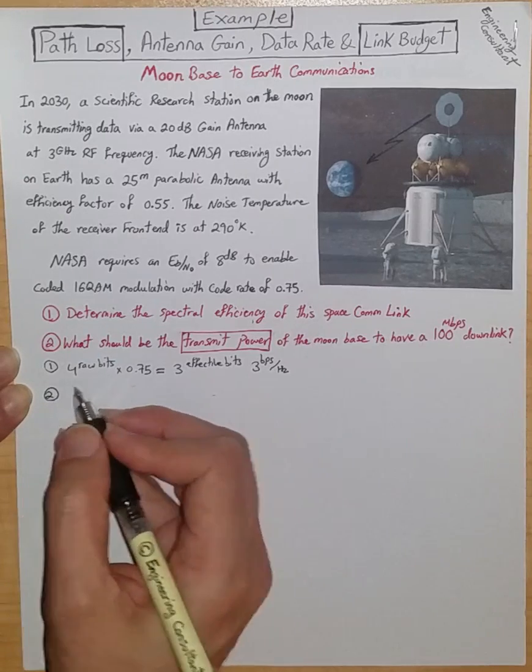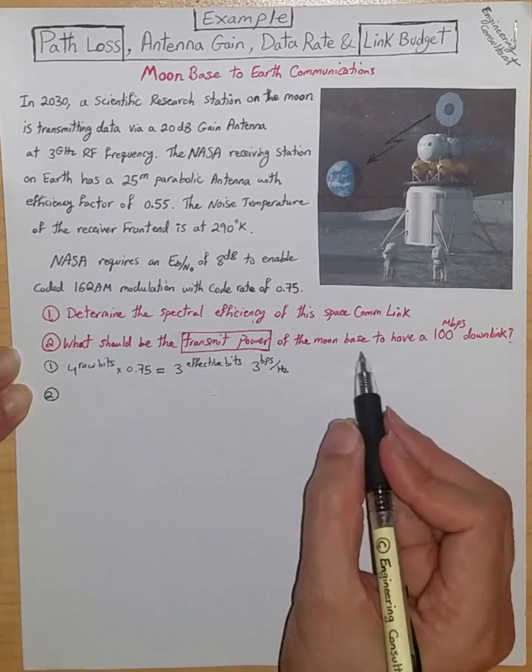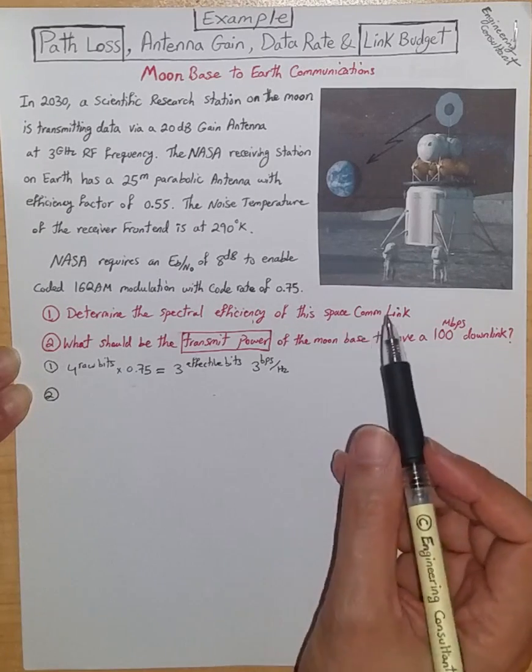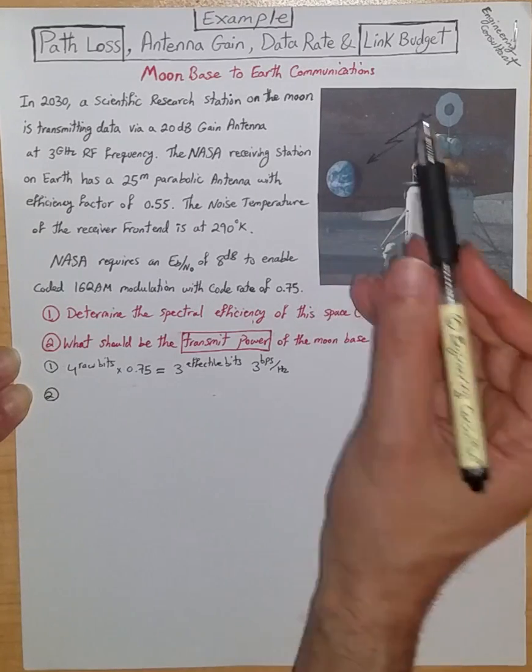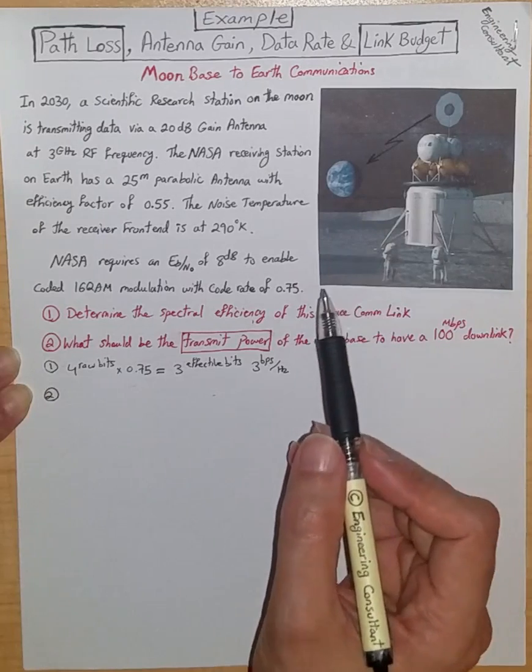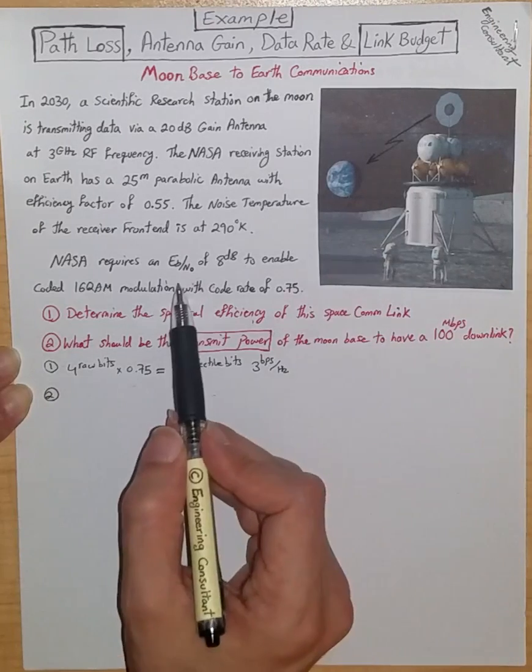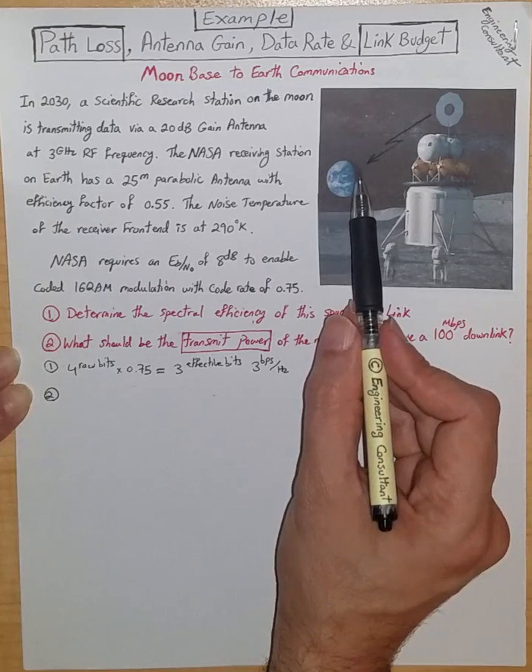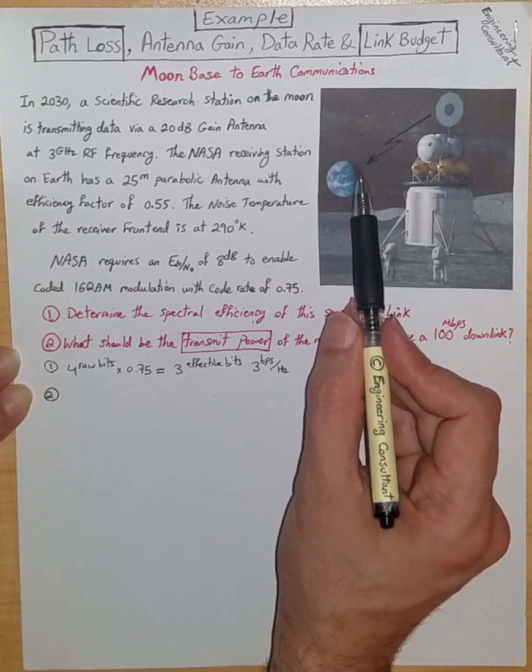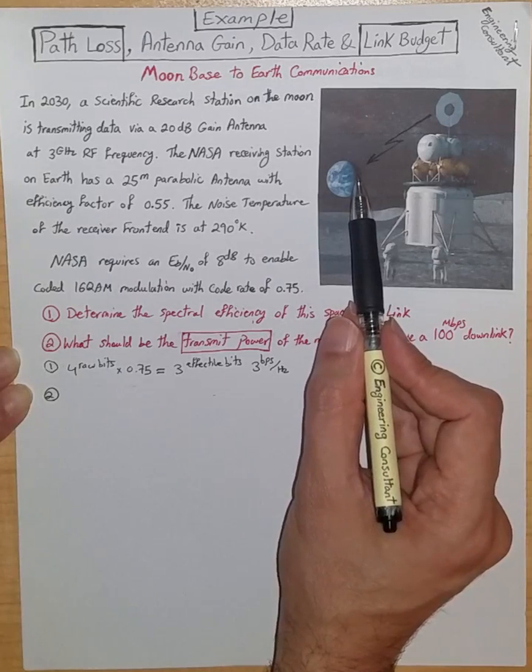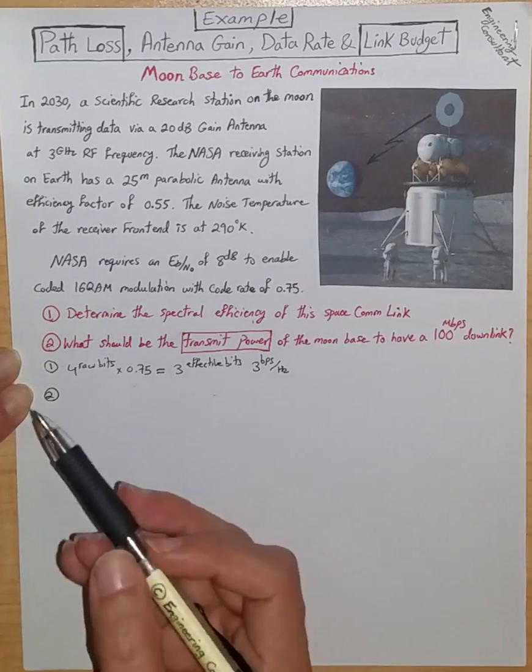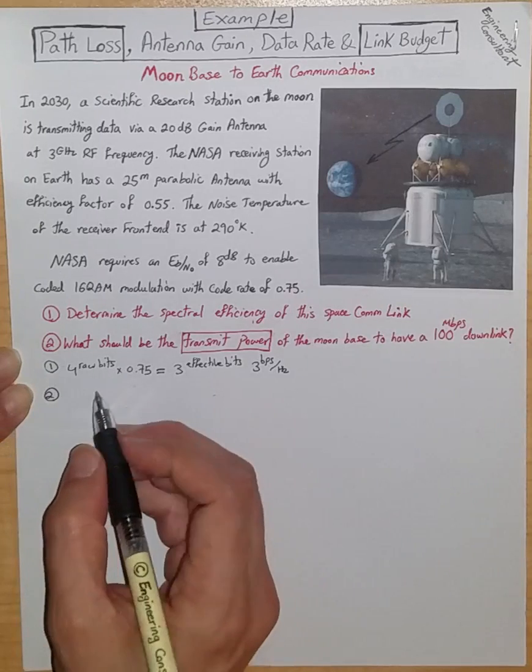Question 2: What should be the transmit power of the moon base to have a 100 megabit per second downlink? For this we need to deal with link budget, meaning that first we need to figure out what is the required received power at Earth Station, and then backtrace the whole thing back to the transmit antenna on the moon.